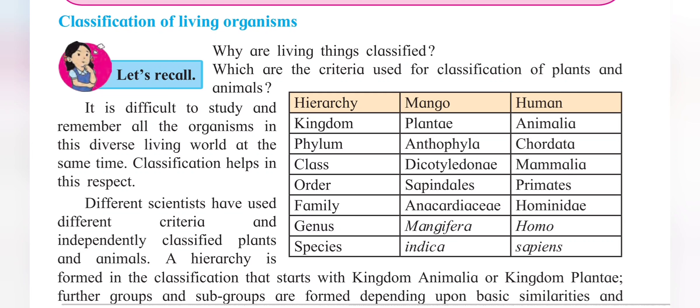The last point of this lesson is binomial nomenclature by Charles Linnaeus who displayed that binomial nomenclature is used to identify each organism.